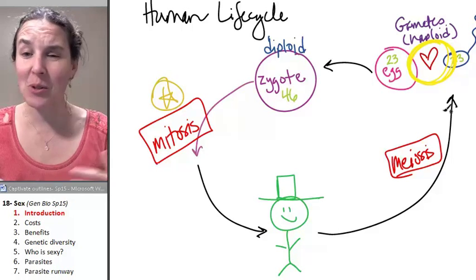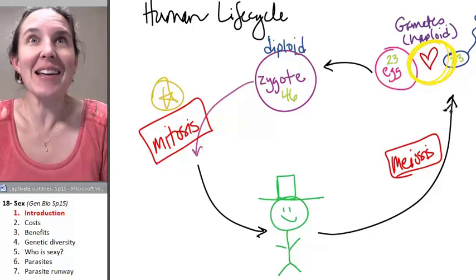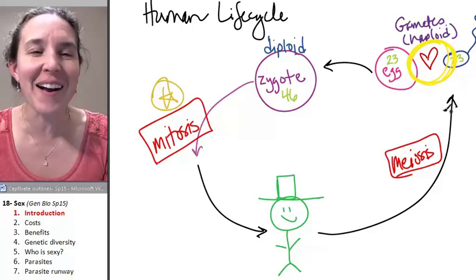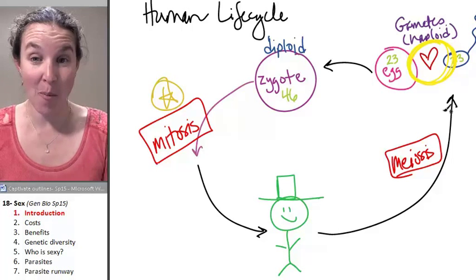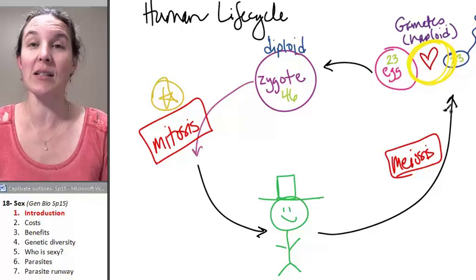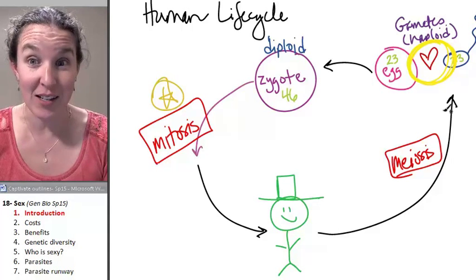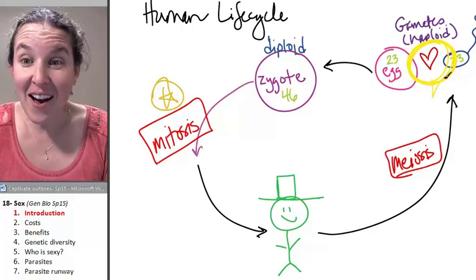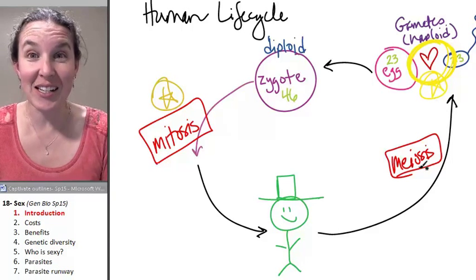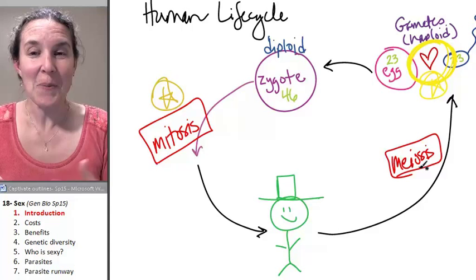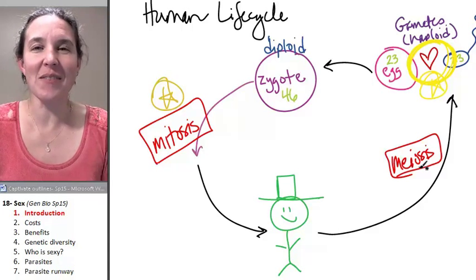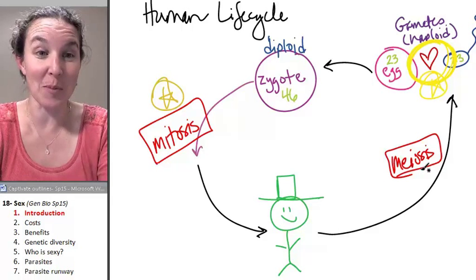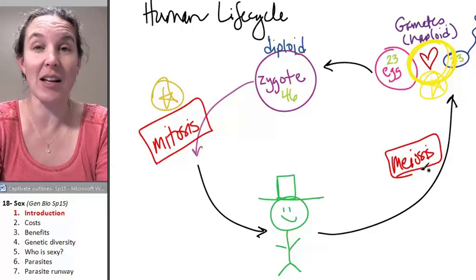And in the animal world, and in the plant world, oh my gosh, all the different ways that critters have come up with to basically engage in sexual reproduction, to carry out the task of joining sperm and eggs, it's fascinating. Take zoology if you want to learn about animal sex, because that's basically what the entire class is.